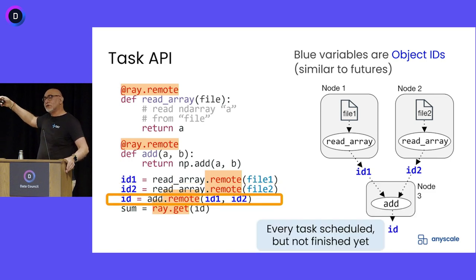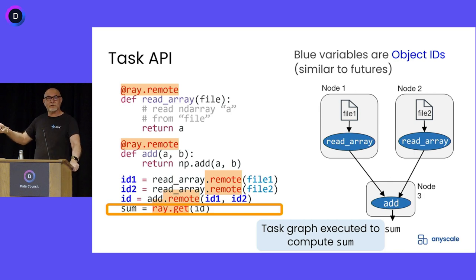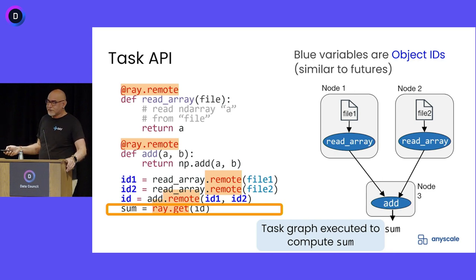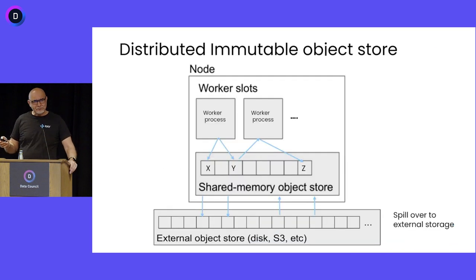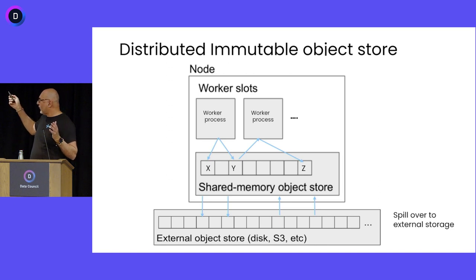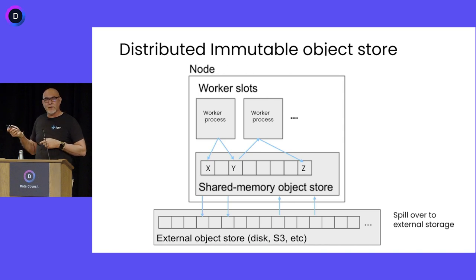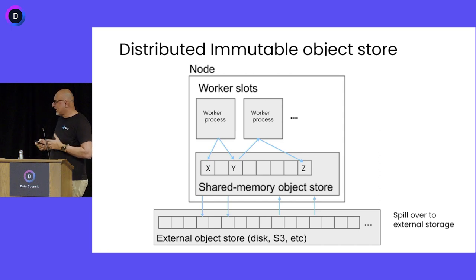When you do 'add.remote()', those two futures are sent to the add function. It figures out that it needs to get those arrays, add them together, and return you the result with 'ray.get()'. 'ray.get()' is a blocking function that waits for the tasks to finish, or returns the value if they've already finished. There is also the distributed object store — the Plasma object store, which is the Apache Arrow format, running on each node. Each node has shared memory, and workers running on those processes have zero-copy access to the data. If the object store runs out of memory, it spills to disk.